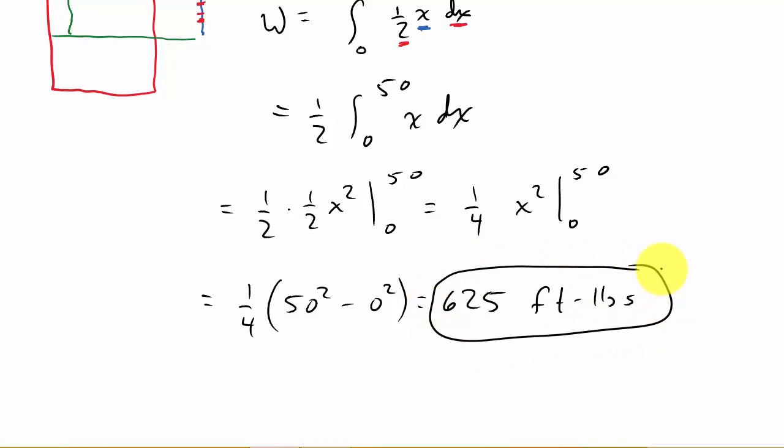Now, you know, these work problems, they're not difficult. All it is force times distance. That's all you're looking for. And that's what we found. We got the force times the distance. And it was just for this little piece. And then, you have to sum all those pieces up from zero to 50.